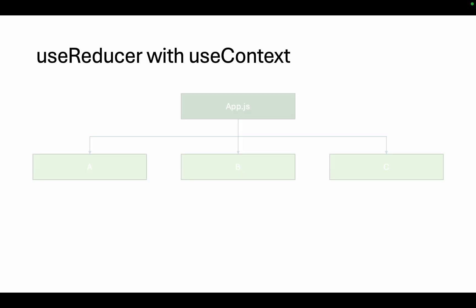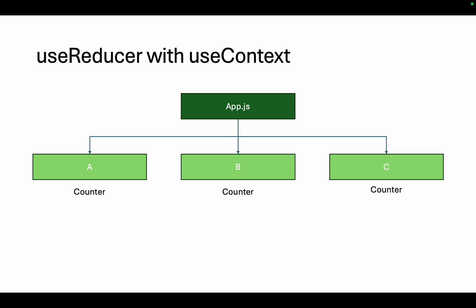What if we have a requirement in which the same counter will be there but the state will not be managed locally? The customer came and said: I want a counter inside the application but the counter value should be incremented from the child components A, B, and C, and the value should be the same — a single counter in the application incremented from A, B, and C. What comes to mind is to lift the state up, move the counter logic to app.js, and use props to pass the counter functionality down. That's pretty normal, but practically it's not feasible.